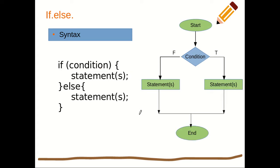Next we have if-else. Here we have the if condition — if it evaluates to true, these statements are executed; if it evaluates to false, the else statements are executed. The flowchart shows: the condition is tested; if false, these statements execute; if true, these other statements execute. After either set of statements is executed, we exit from the control structure.